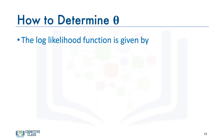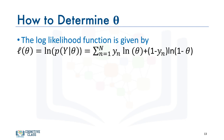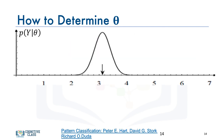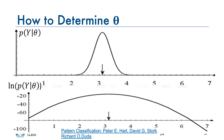It turns out that it's simpler to maximize the log of the likelihood function, given by the following expression. Because the log is monotonically increasing, it may change the shape of the function, but it does not change the location of the maximum value for the parameter theta. And that's it.